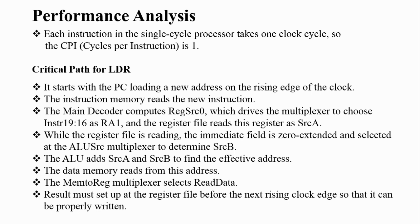In this lecture we are going to deal with the performance analysis of a single cycle processor. Performance analysis deals with calculation of how much time an instruction will take for execution in a particular processor. Since it is a single cycle processor, each instruction takes one clock cycle to execute, so the CPI — clock cycles per instruction — will be one. For performance analysis, first we need to find out the critical path of a particular instruction.